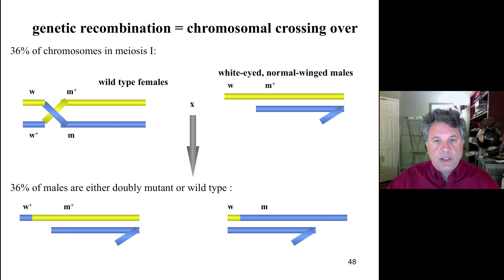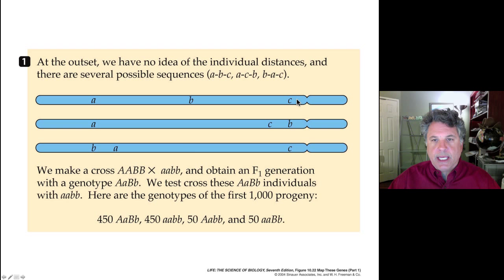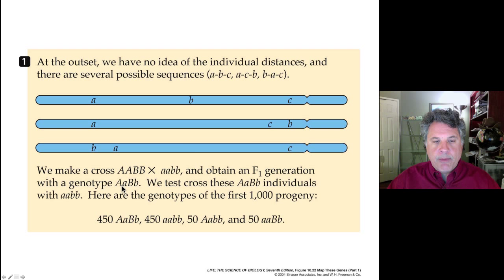Let's look at an example. Here we have three genes A, B, and C. We don't know the order of the genes on the chromosome, nor do we know the distances between them. We make a cross of a true-breeding double dominant line to a double recessive individual, producing a dihybrid that is hybrid for alleles of genes on the same chromosome. We then do a test cross, crossing these heterozygous individuals to homozygous recessive individuals — that's the definition of a test cross.